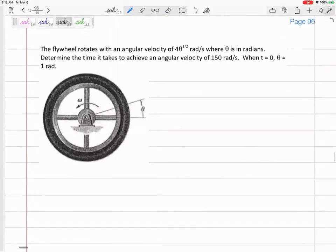How about the next one? So again, this is rotating with an angular velocity of 4 theta to the 1 half. Omega equals 4 theta to the 1 half, where theta is in radians.